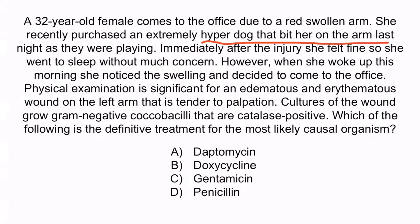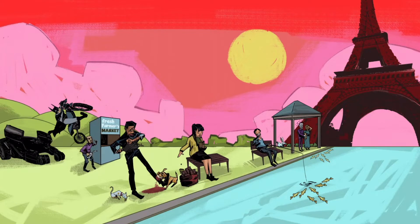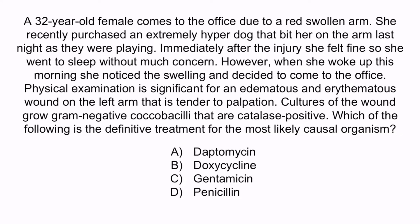A dog bit this patient on her arm, and cultures of the wound grow gram-negative coccobacilli that are catalase positive. Together, this should make you think of Pasteurella, and recall that the treatment for Pasteurella is penicillin. So the correct answer is D, penicillin. From the image, recall the lady tipping the pastor with a penny is to help you remember that Pasteurella is treated with penicillin. A is incorrect because daptomycin is typically used to treat infections caused by gram-positive cocci, such as skin infections caused by Staphylococcus. B is incorrect because doxycycline treats Brucella, which is associated with consumption of unpasteurized milk. C is also incorrect — gentamicin is an aminoglycoside used to treat Francisella, which is more commonly associated with exposure to rabbits or deer flies. The correct answer is D, penicillin.